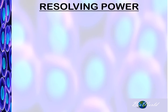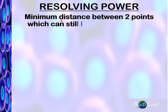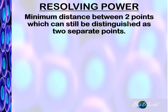The ability to see a clear image through a microscope depends on the resolving power of the microscope. Resolving power refers to the minimum distance between two points which can still be distinguished as two separate points. Let me use this as an example.